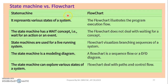This is a user authentication process. A state machine is like a flowchart — the state diagram is a type of flowchart. The state machine represents the various states of the system. The flowchart illustrates the program execution flow. The state machine has a wait concept — that is, it waits for an action or event. If you have an action or event, you can have a wait state. But in a flowchart, there is no wait concept.